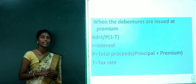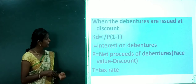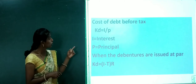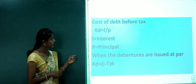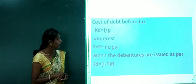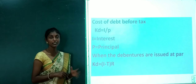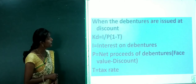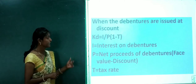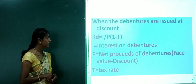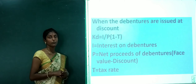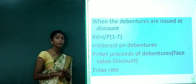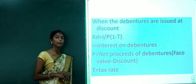So in this section we covered when the debentures are issued at discount and when debentures are issued at premium — cost of debt and how we apply the four formulas one by one in calculations.